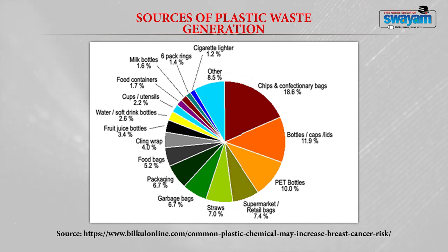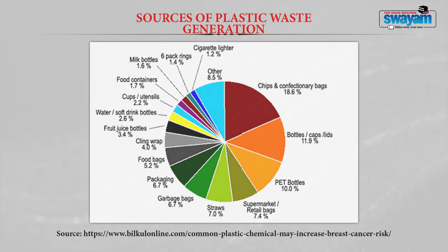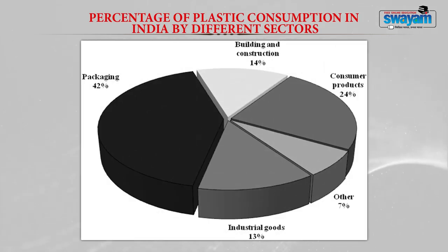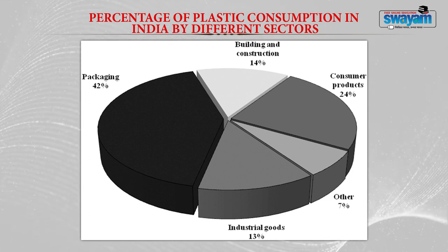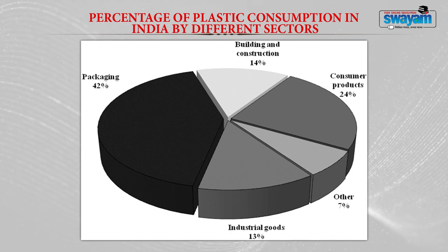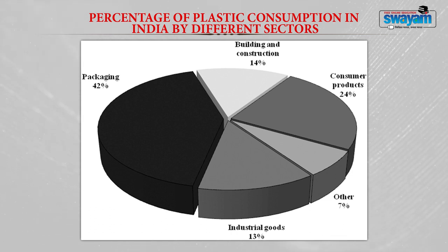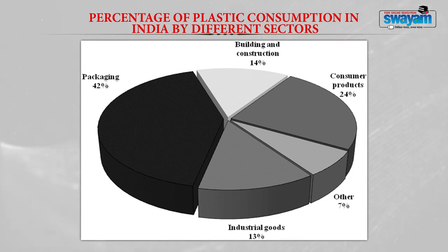Even cigarette lighters contain plastic and contribute 1.2 percent of plastic waste generation. Looking at which industries consume plastic, a pie chart shows that the packaging industry uses the maximum, contributing 42 percent, followed by consumer products at around 24 percent. Building and construction industry uses 14 percent, industrial goods 13 percent, and others contribute 7 percent of plastic consumption.